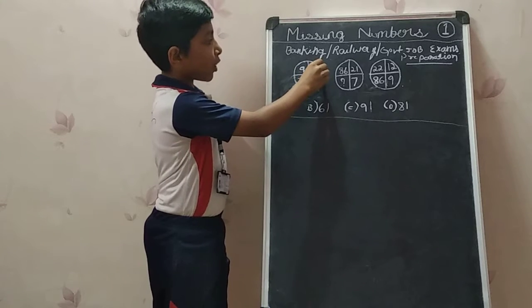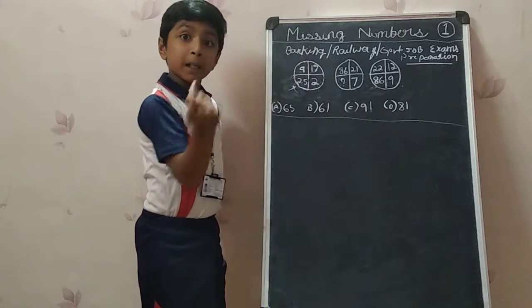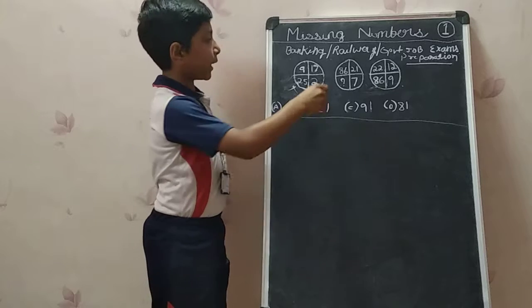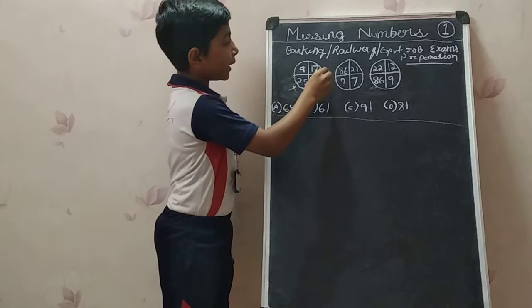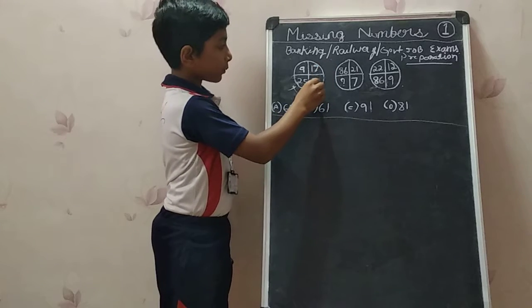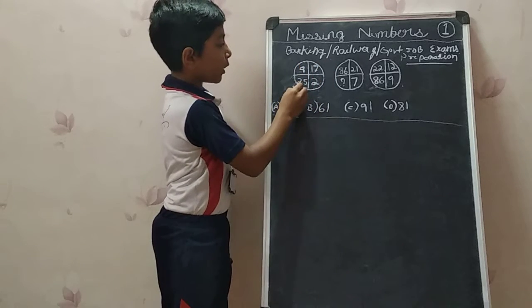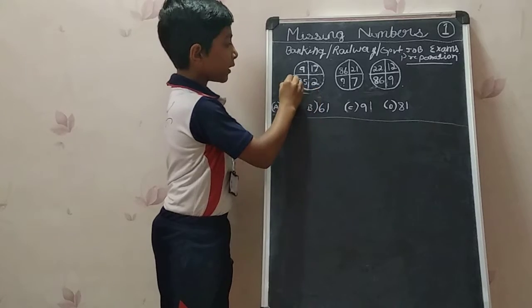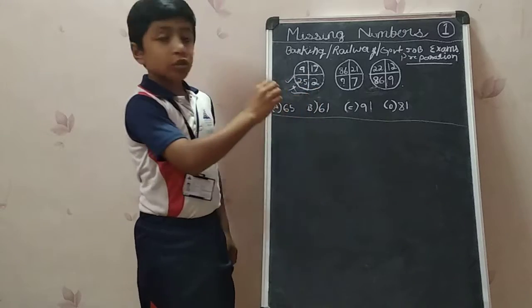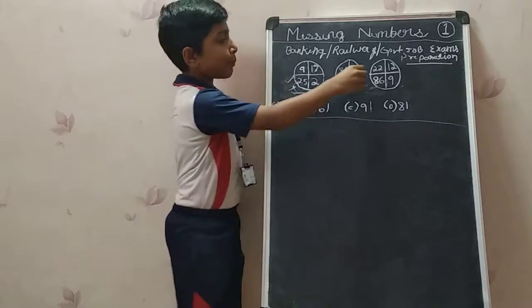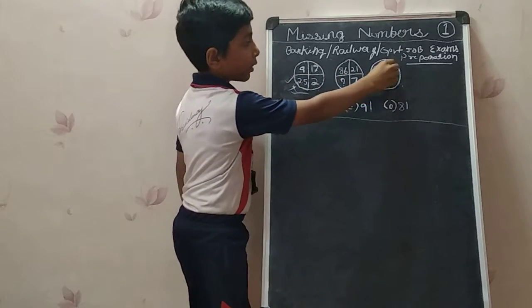Let us try multiplying and subtracting: 17 into 2 equals 34, minus 9 equals 25. Yes, it is coming. So let us apply the same logic here.